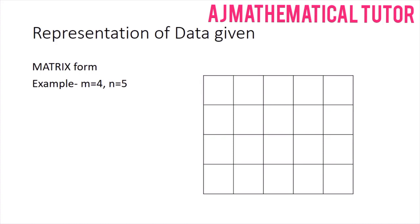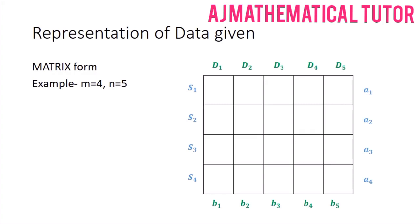In the table, each row denotes a respective source and each column denotes a destination. So S1, S2, S3, S4 are the sources and D1, D2, D3, D4, D5 are the destinations. The supplies available at the sources — a1, a2, a3, a4 — are written in front of each row, and the demands of the respective destinations — b1, b2, b3, b4, b5 — are written below each column.